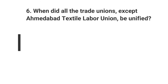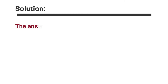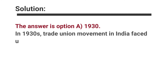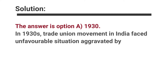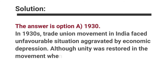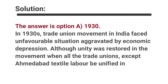Question number six: When were all trade unions except the Ahmedabad Textile Labour Union unified? Options are A. 1930, B. 1928, C. 1932, D. 1933. The answer is option A, 1930. In 1930, the trade union movement in India faced an unfavorable situation aggravated by economic depression. However, unity was restored when all trade unions except the Ahmedabad Textile Labour Union were unified in 1930.